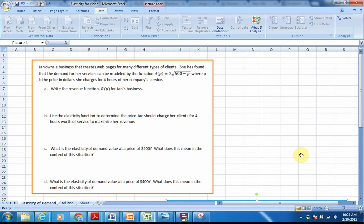So the example that I'm going to use: Jan owns a business that creates web pages for many different types of clients. She has found that the demand for her services can be modeled by the function D(P) equals 2 times the square root of 500 minus P, where P is the price in dollars she charges for 4 hours of her company service. The first thing is to write the revenue function, which is R(P) equals P times 2 times the square root of 500 minus P.